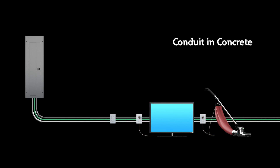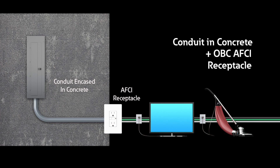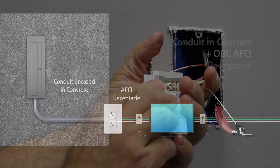The code also allows the use of conduit in concrete with an AFCI receptacle. This method allows for metal or non-metallic conduit or tubing to be encased in not less than 2 inches of concrete for the portion of the branch circuit between the panel and the first AFCI receptacle in a circuit. This method has limited applications and can be costly.